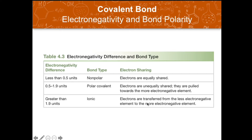You might be wondering how large the electronegativity difference needs to be to consider a bond polar. Approximately, if the electronegativity difference between two atoms is 0.5 units or greater — specifically 0.5 to 1.9 units — it is considered a polar covalent bond. If the difference is greater than 1.9, the bond would be ionic, while below 0.5 units the bond type would be non-polar covalent.